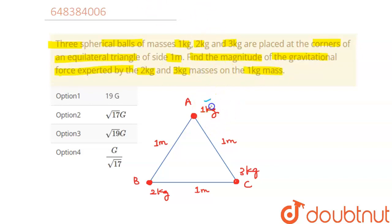So this is our equilateral triangle, this is the 1kg mass. Okay, so we have to find the force acting on this 1kg mass because of this 2kg and 3kg masses. Let's do that.